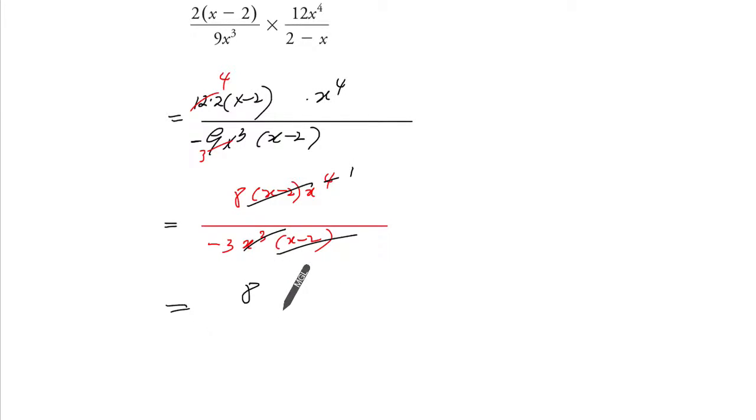So you get 8x over minus 3. Of course, before you reduce, you've got to state restrictions: it's 0 and 2.